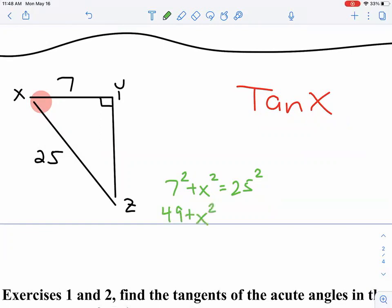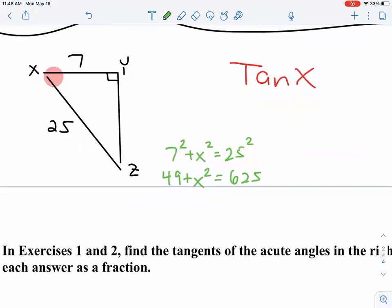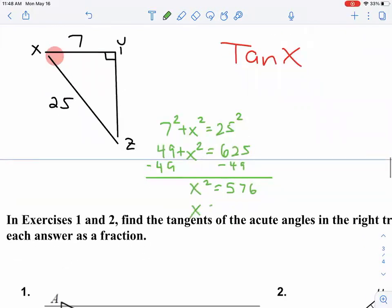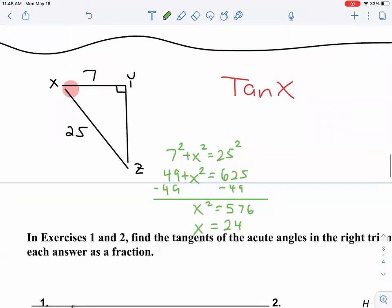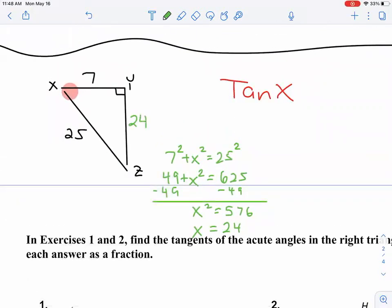And this is, we've been doing this Pythagorean theorem for a while here. Plus X squared. And 25 squared is 625. So I'm going to subtract 49 from both sides. I get X squared equals 576. And then take the square root. And so the side comes out to be 24.